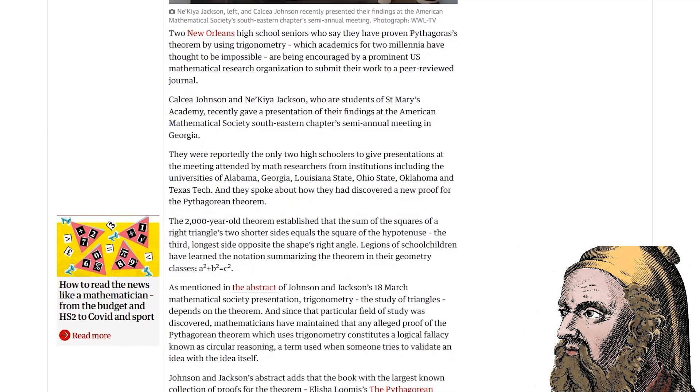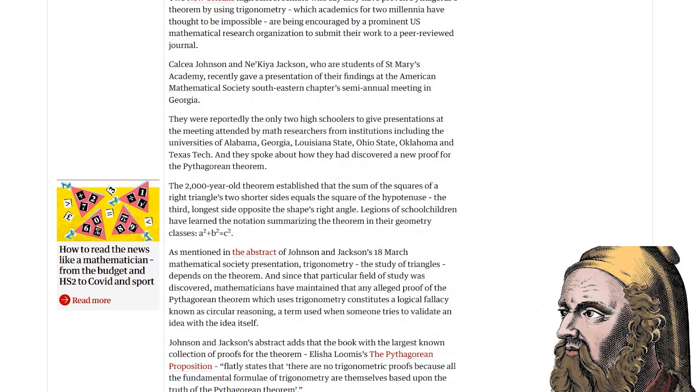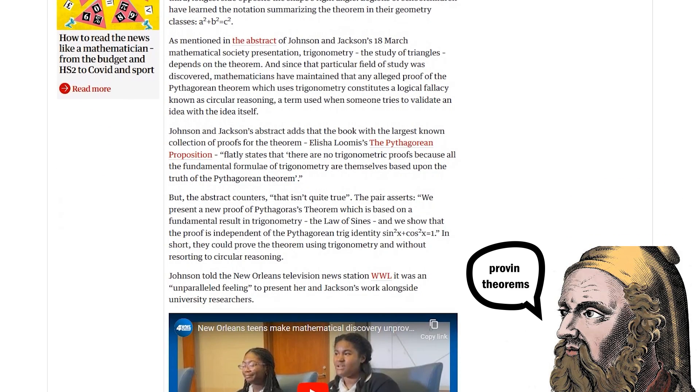Alicia Loomis' book, which contains no less than 256 proofs of the Pythagorean theorem, does not include a single one relying solely on trigonometry. And in fact, the author claims that there are no such trigonometric proofs.